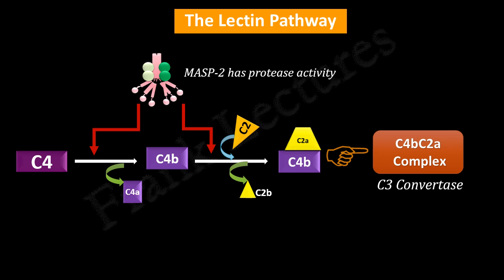We saw how the lectin pathway leads to the generation of C3 convertase, and here the C3 convertase is represented by the C4B-C2A complex.